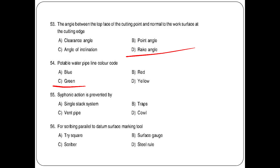Syphonic action is prevented by — options: single stack system, trap, venti pipe, call roll. The answer is venti pipe. For scribing parallel to datum surface, which making tool is used? Options: try square, surface gauge, scriber, steel rule. The answer is option B: surface gauge.